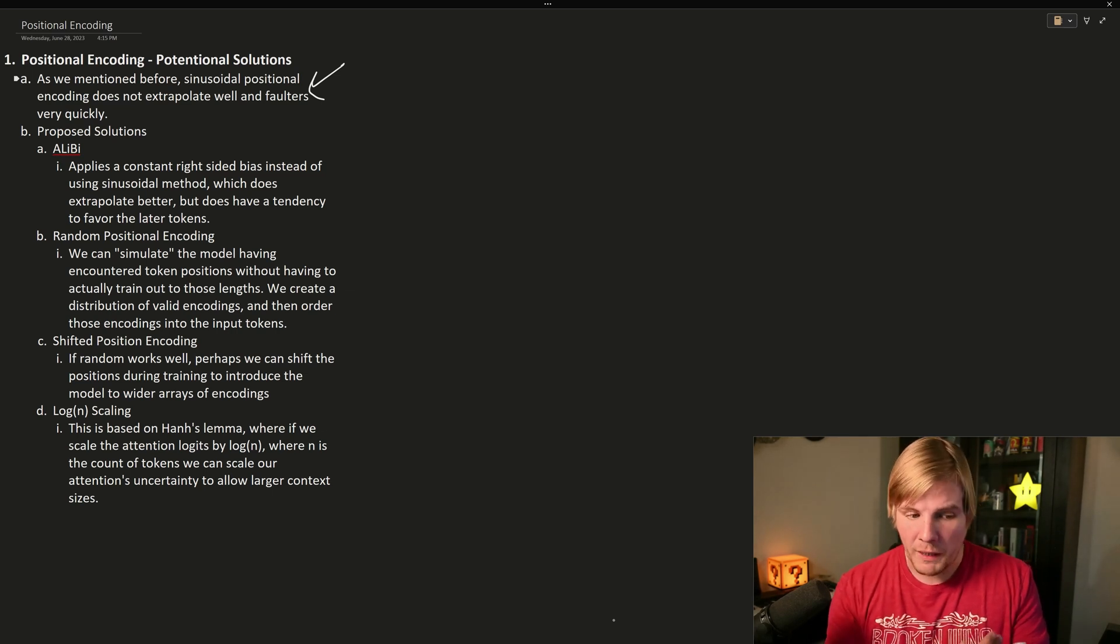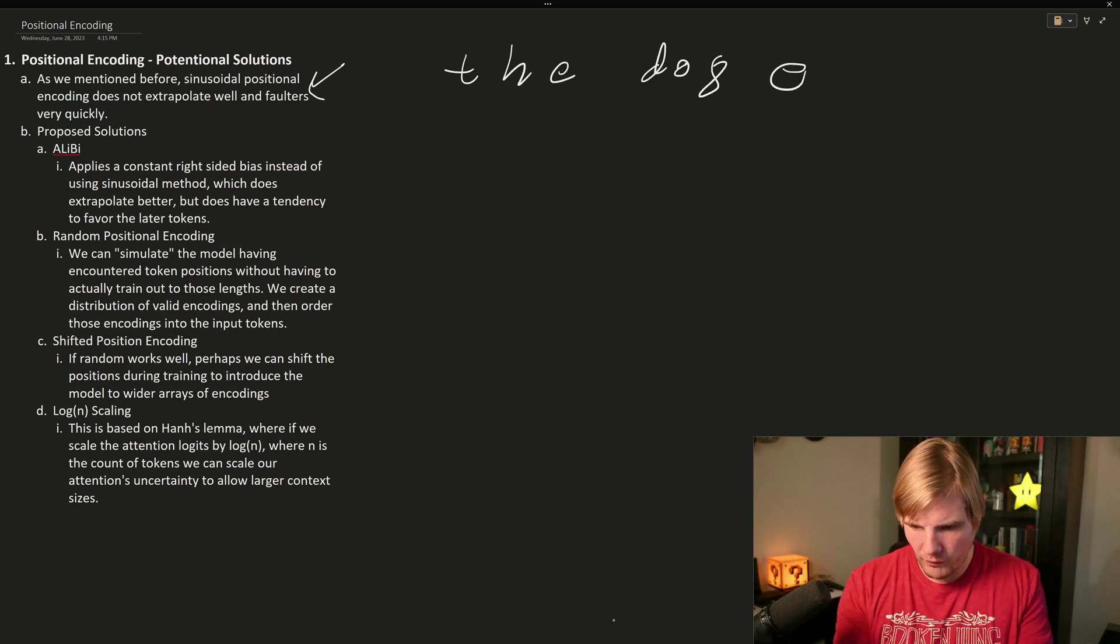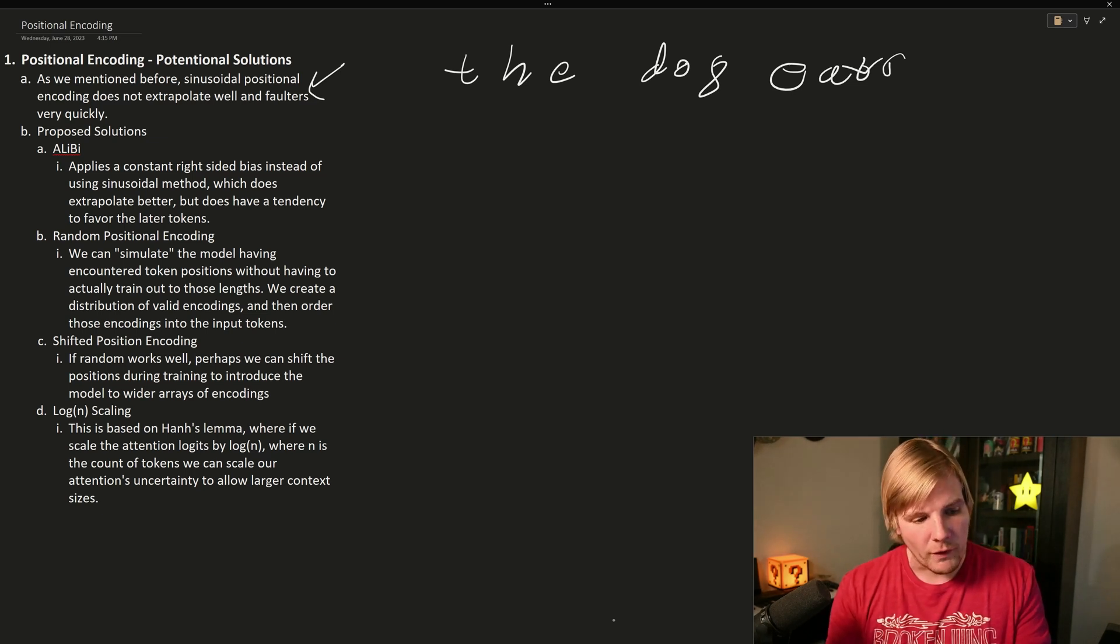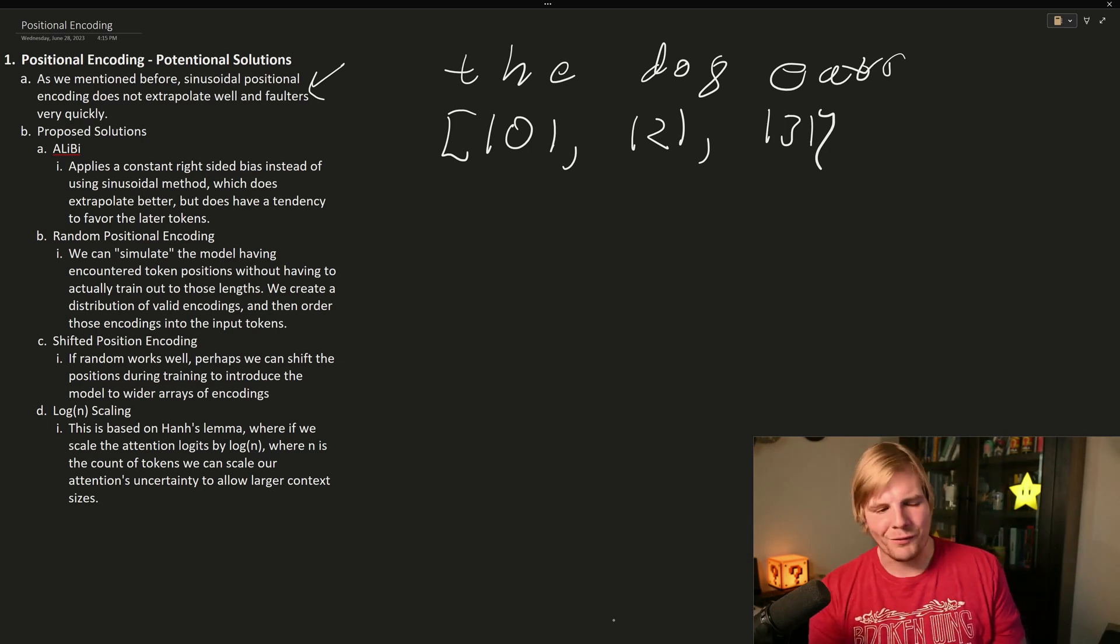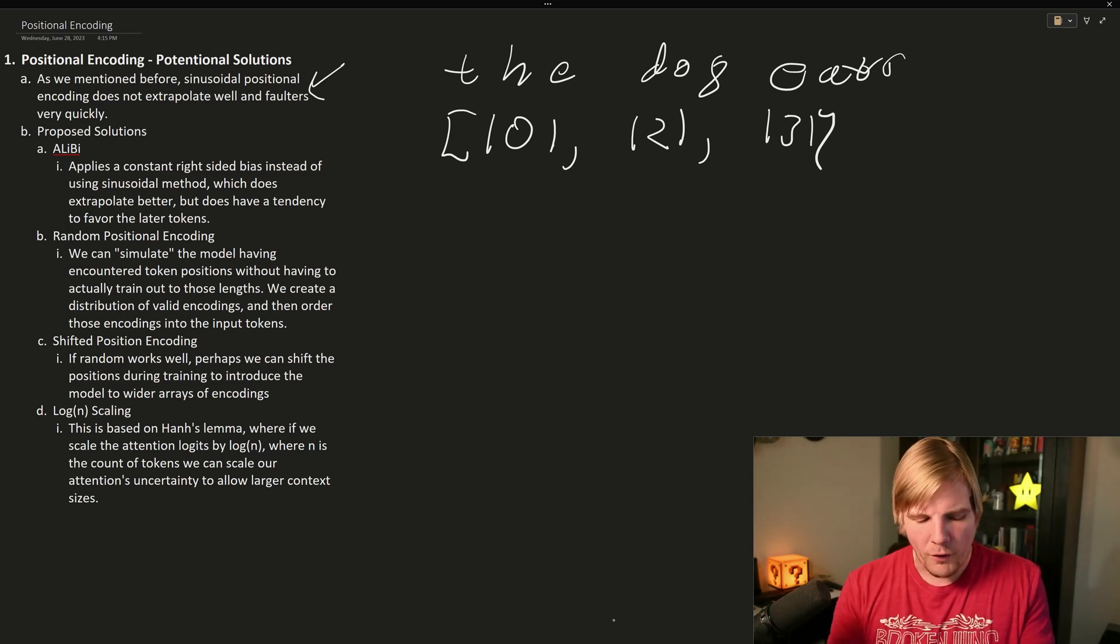So if we have any number of input tokens, we have a matrix that we have embedded those tokens against. So if we have three tokens, the dog eats, we would convert these into tokens, and it could be 101, 121, and 131. Don't pay any attention to those values, they're just totally made up. But they would get embedded into a matrix, where if our embedding dimension is three, we'd get a three by three matrix. So we would have values like potentially 1.21, 1.42, 1.11,